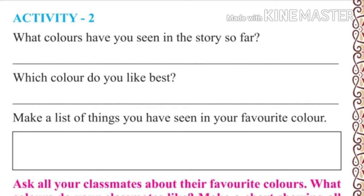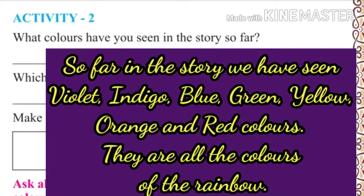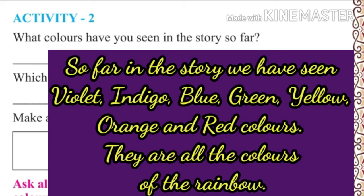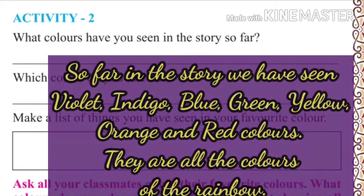So far in the story, we have seen violet, indigo, blue, green, yellow, orange and red colors. They are all the colors of the rainbow.